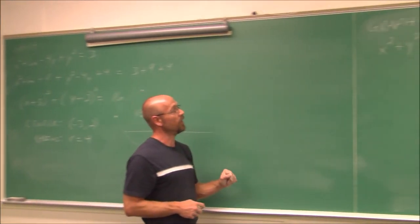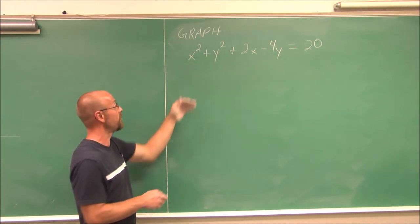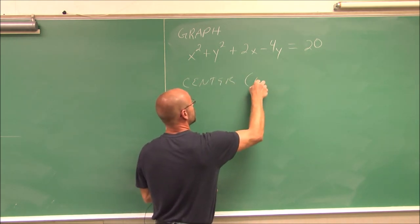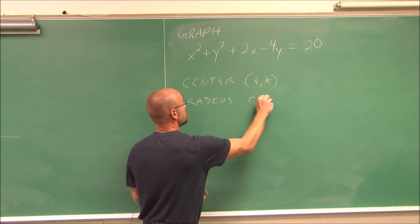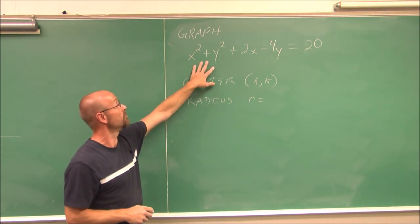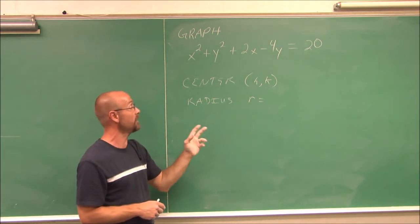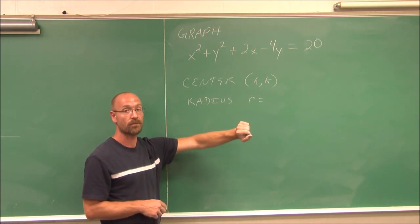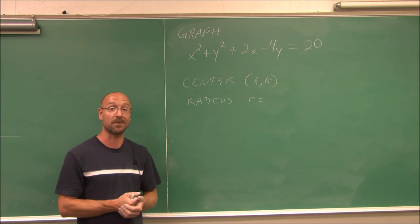One last one — this is going to be for you to try. Graph a circle, identify its center (h, k) and its radius, and then graph it. You'll notice it's not in standard form, so you'll need to rearrange your x and y values, complete the square twice, and write it in standard form to determine your center and radius. This has been section 9.3: Distance Formula, Midpoint, and Circles. Thank you for watching.